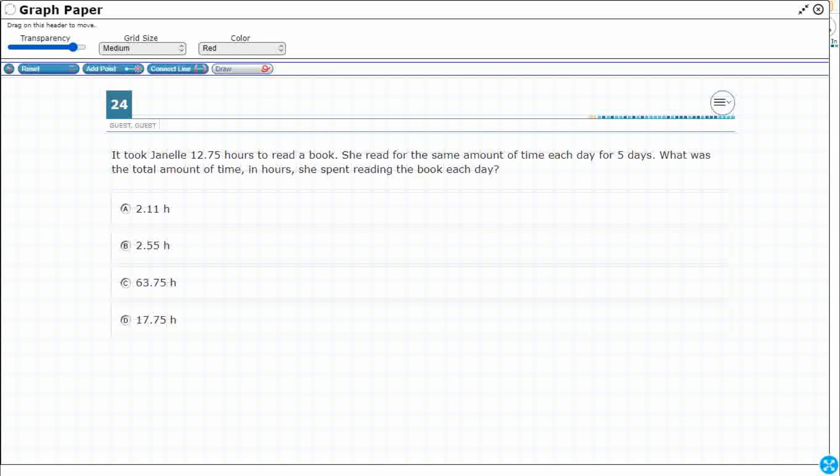So it took Janelle 12.75 or 12 and 75 hundredths hours to read a book. Now it doesn't say total but this definitely sounds like a total because if I get a number larger than this, like this one is greater than, this one is greater than, it's not going to make much sense is it? Look at this.